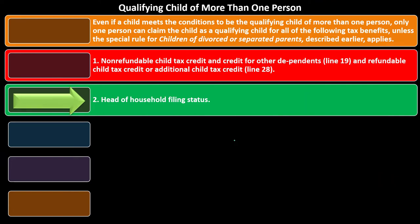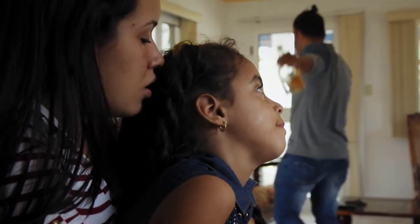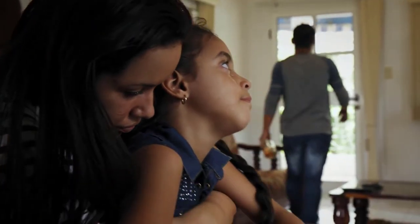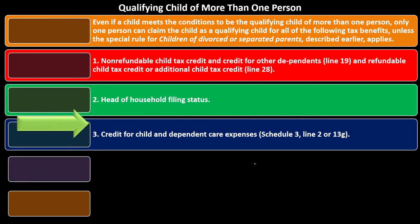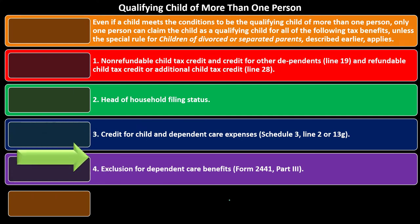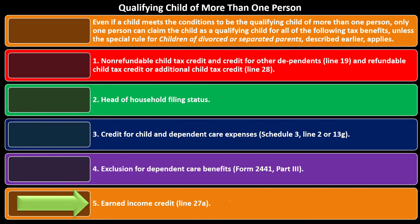Two: head of household filing status — you can't use the same child to push both separated parents from single to head of household. Three: credit for child and dependent care expenses, like the credit for the actual cost of care being provided. Four: exclusion for dependent care benefits. And five: earned income tax credit, which is another huge refundable credit dependent in part on children. You can't have the same child qualifying for the earned income tax credit for two people.